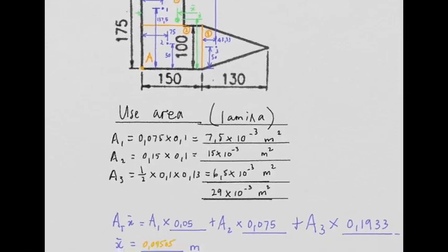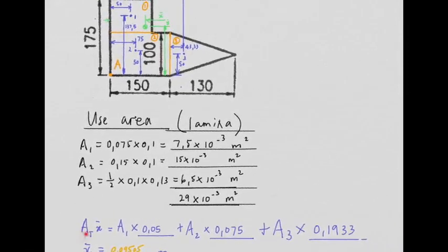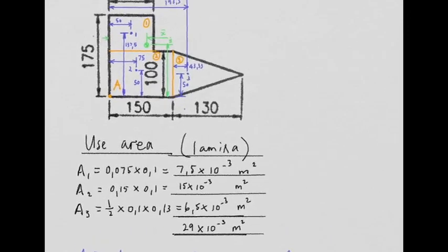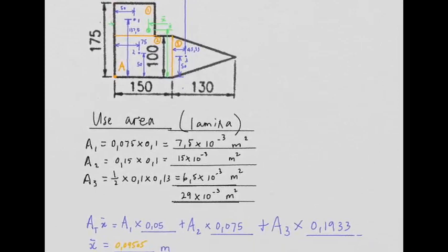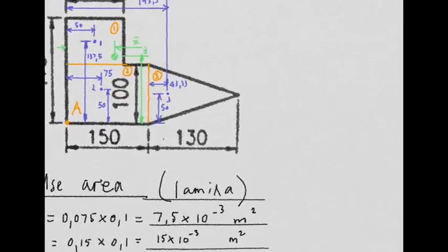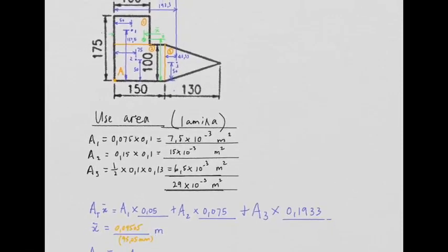Right, now for our statement where we take total area times the distance x̄, which is the distance from our reference edge across to wherever the centroid is going to be, we're talking from left to right. And that is equal to area one times the distance from the reference edge to its centroid. In other words, from this reference edge to the centroid of the first one, remember that is 50 millimeters. Second one, 75 millimeters. Make sure that you can see where that is. From the reference edge across to the centroid would be 75 millimeters, half of 150. Finally the triangle, from the reference edge across to its centroid would be, as I said moments ago, 193.3.